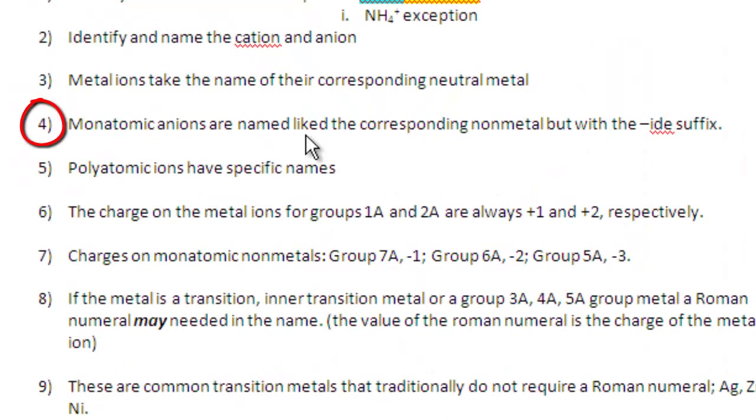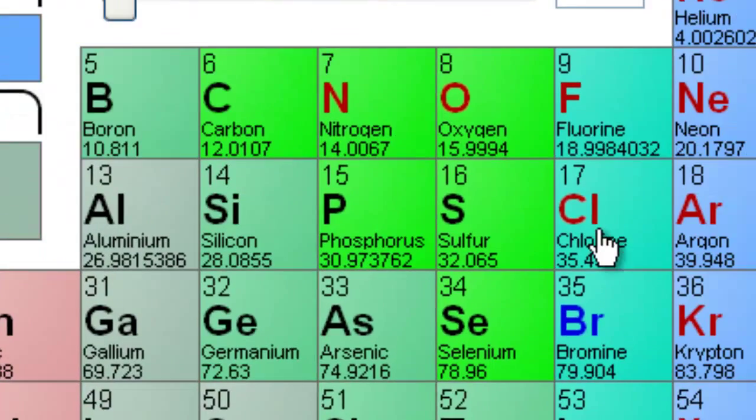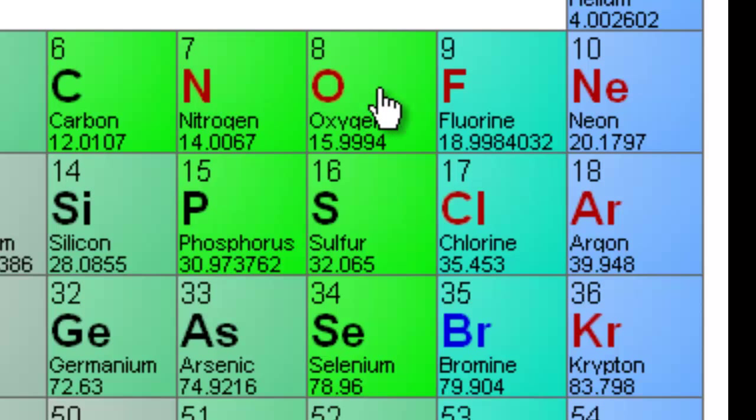On the other hand, monatomic anions are named like their corresponding non-metal but with an -ide suffix. For example, nitrogen, oxygen become nitride and oxide. Fluorine, chlorine, bromine become fluoride, chloride, bromide, et cetera.